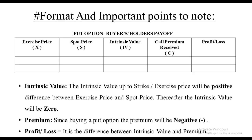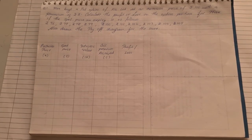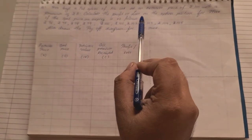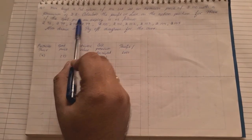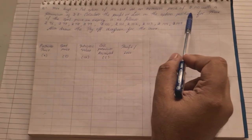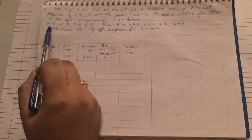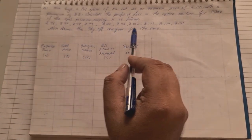Based on these rules, let us see how to solve the sum by taking two examples. In the first sum, Max buys a put option of Reliance Limited at an exercise price of rupees 100 with a premium of rupees 3. We need to calculate the profit or loss on the option position if the spot price on expiry is as given, and also draw the payoff diagram.